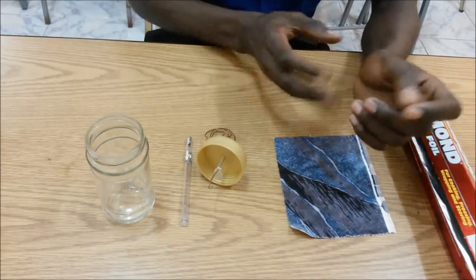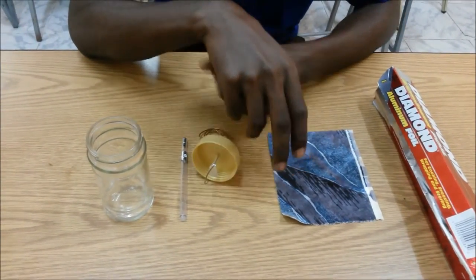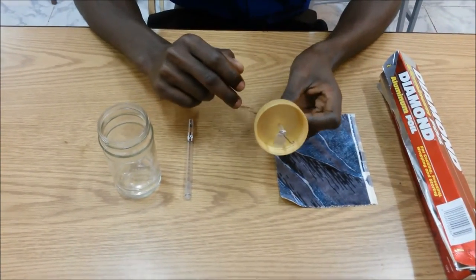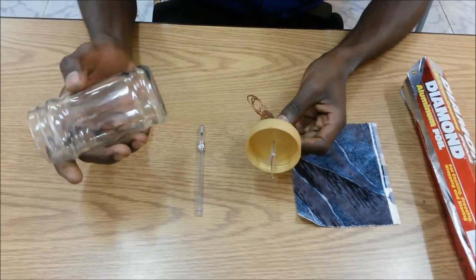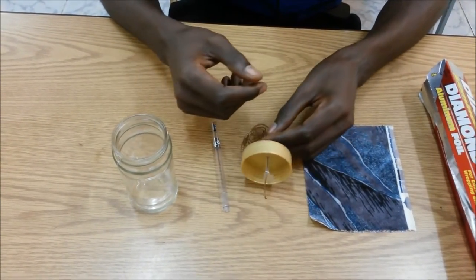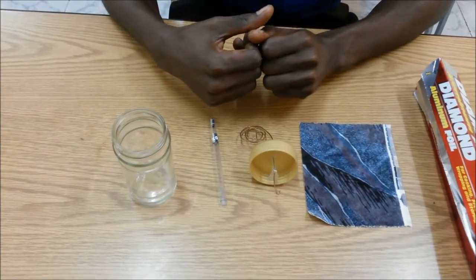So these are the items that we'll be using: some foil paper, piece of cloth with a silky surface, a copper wire, and an old coffee jar, a pen. So let's go through the process of actually making the electroscope.